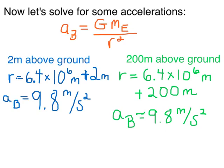Now let's repeat the process for dropping the ball 200 meters above the ground. Now the distance between the centers is the radius of the Earth plus 200 meters. If you repeat the process using this number for R instead, you get, once again, 9.8 meters per second squared.